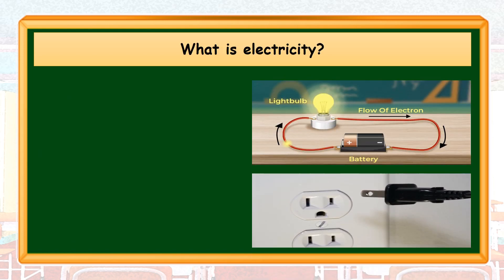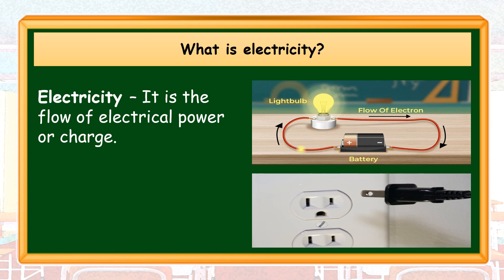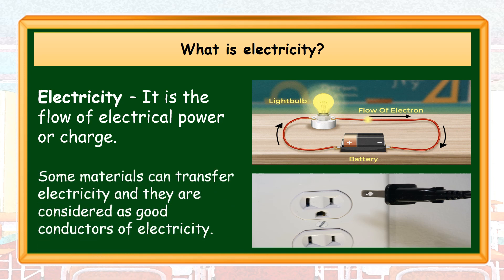Battery and electric outlets are examples of sources of electricity. A battery emits electric charge and travels through wires that makes the light bulb turn on. Same thing with electrical appliances — if you plug it into an electric outlet and turn it on, the appliance will eventually work as well. Electricity is the flow of electrical power or charge. Some materials can transfer electricity and they are considered as good conductors of electricity.